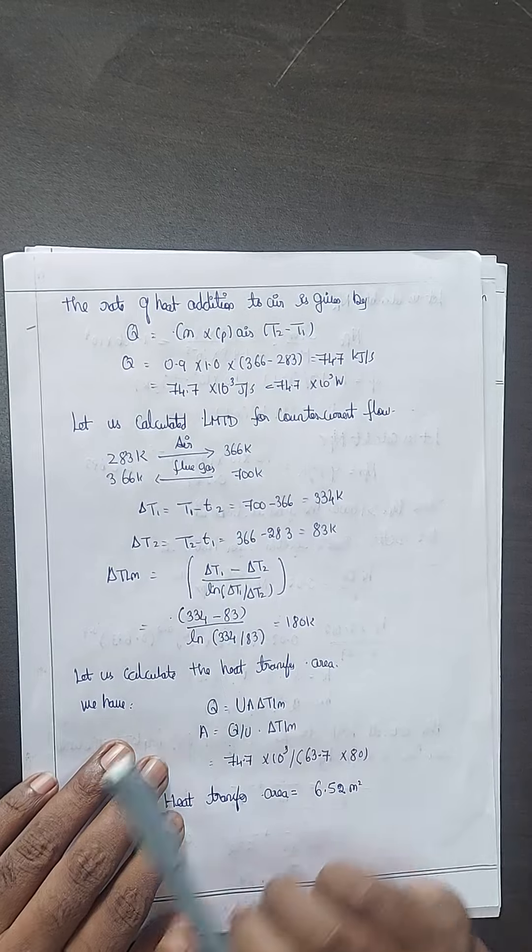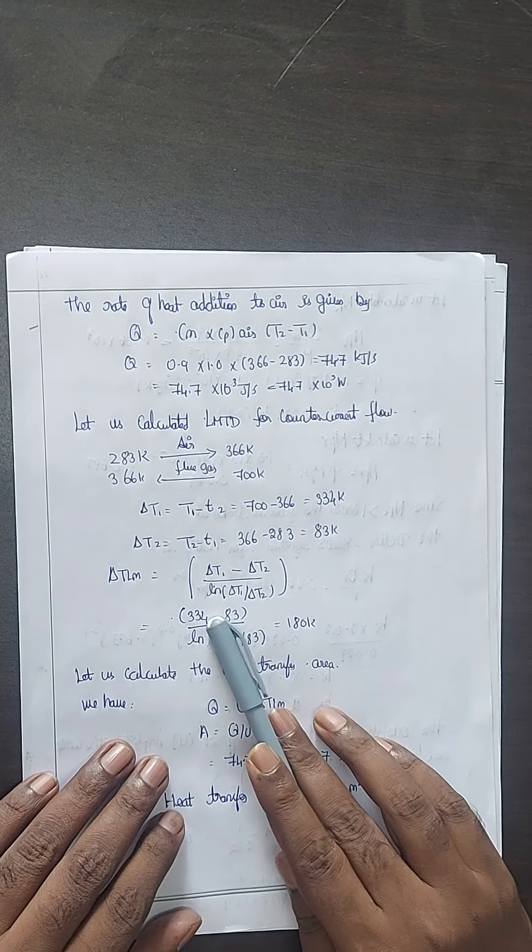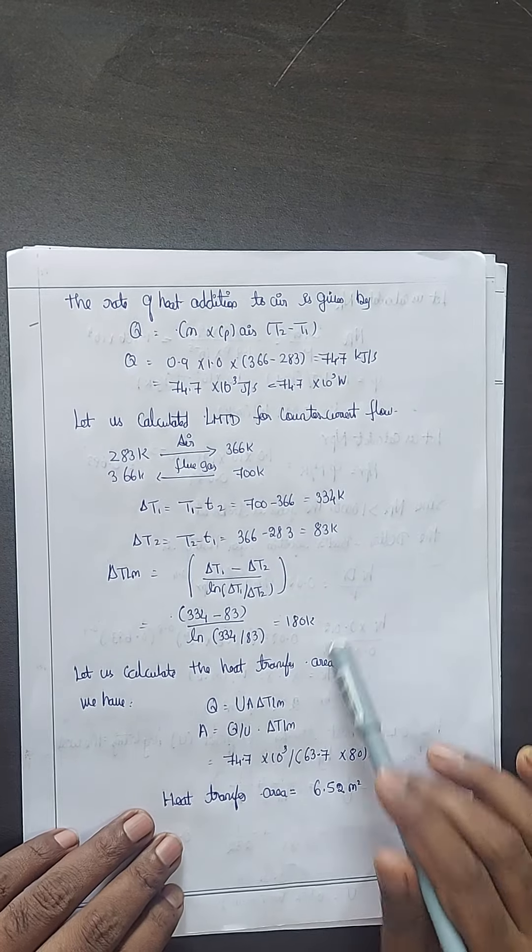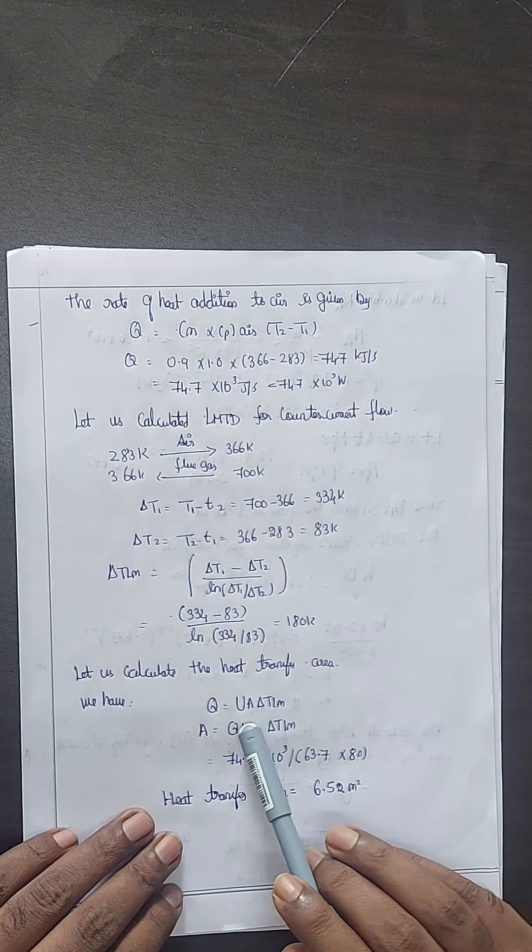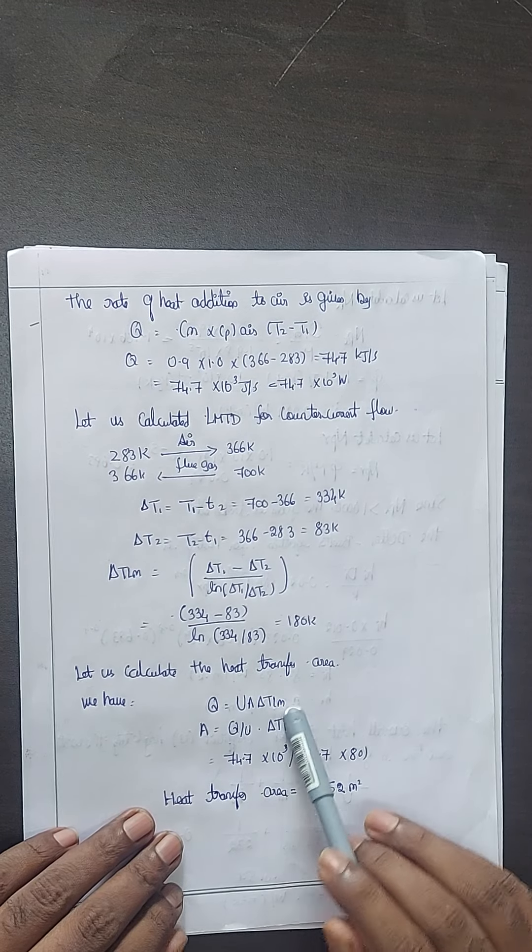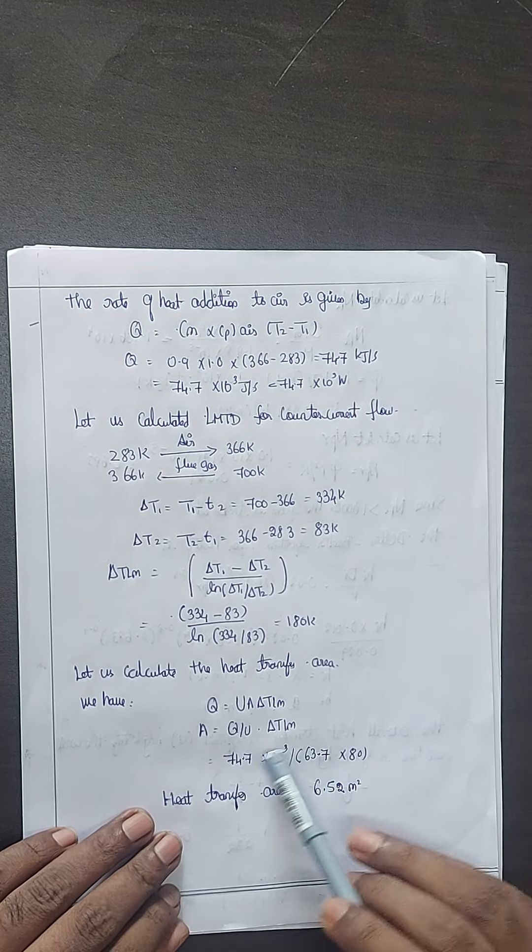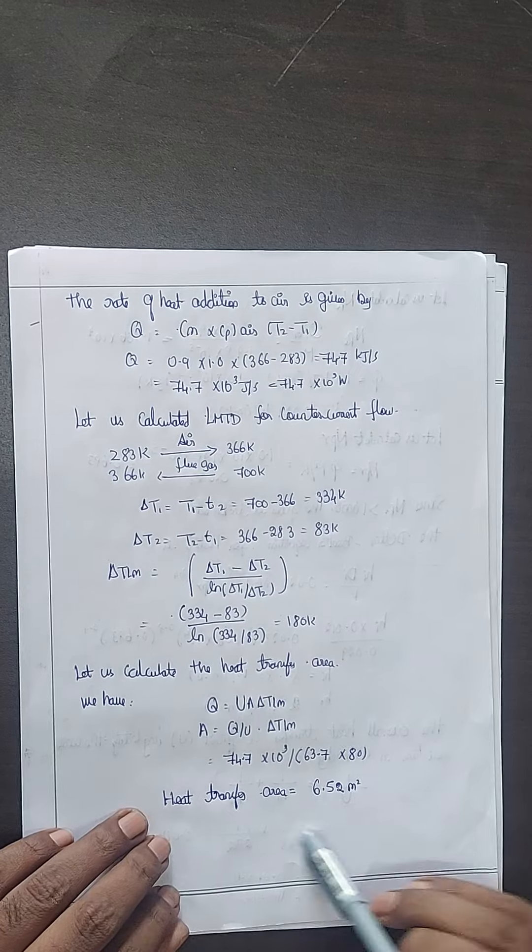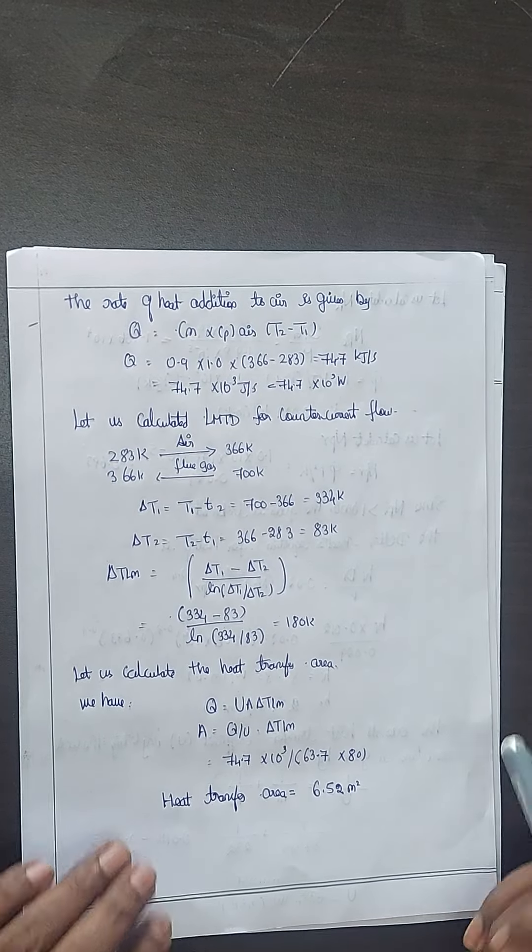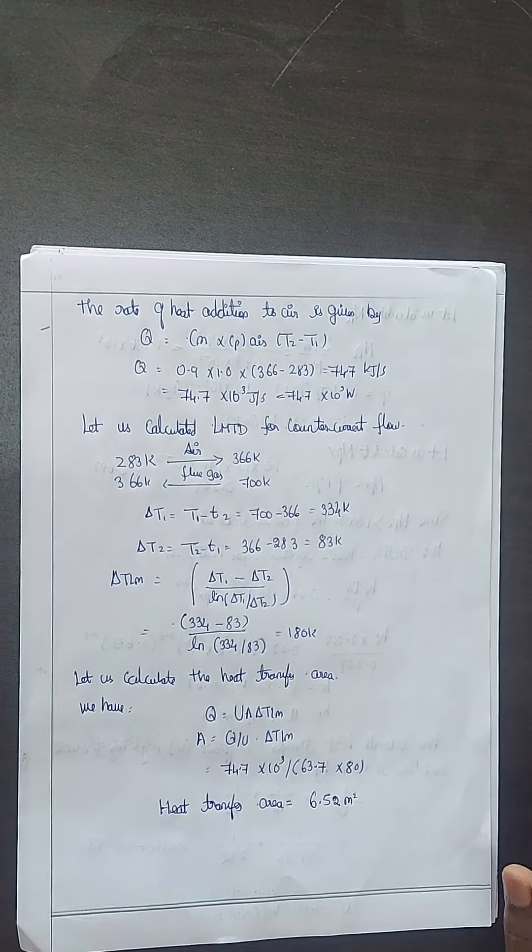Calculate delta T1 and delta T2. LMTD equals delta T1 minus delta T2 divided by ln of delta T1 by delta T2. Area: Q equals U A LMTD, so area equals Q divided by U LMTD. Heat transfer area is 6.52 m². Thank you.